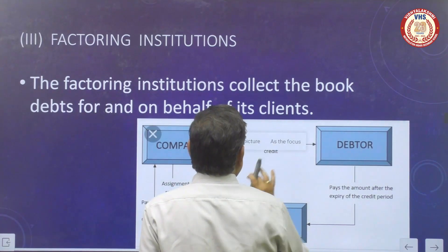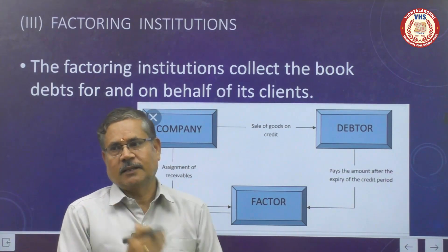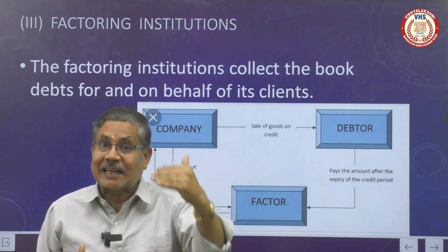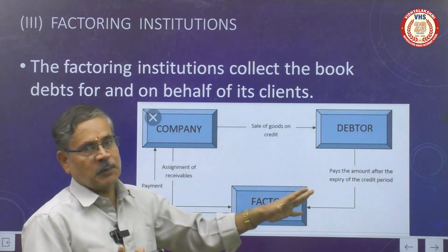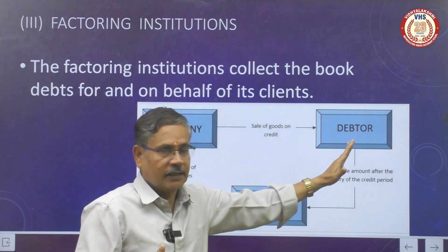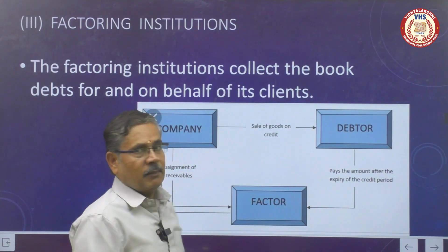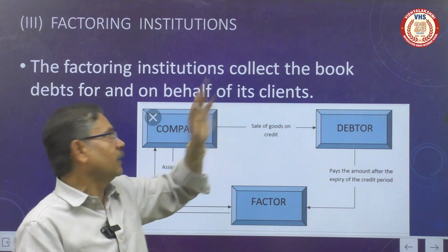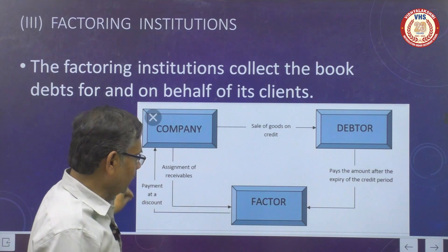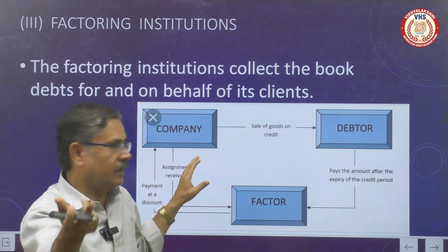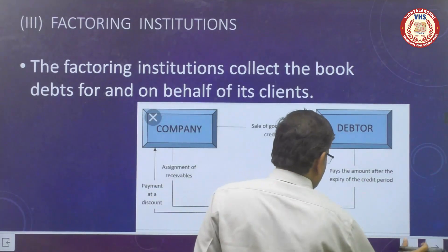The third one is the Factoring Institution. What is meant by factoring? The institution collects money and the company hands over its book debts on behalf of the client. The first company sells goods on credit, and after the expiry of the credit period, the payment is due. The factoring institution collects money from the company at a discount and collects the book debts on behalf of the client. That is what is meant by factoring.